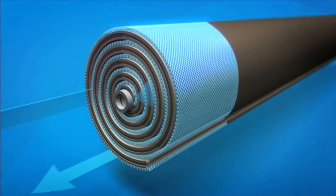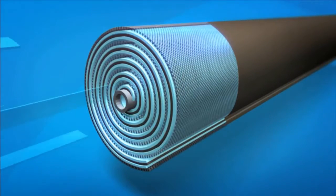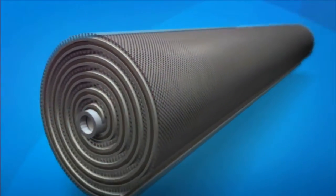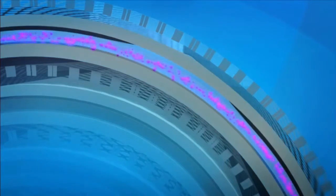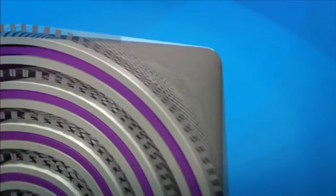Feed water is forced through the feed channel spacer and into the barrier layer of the membrane. Water passes through the membrane surface into the permeate channel. It flows in a spiral direction and collects in the core tube.